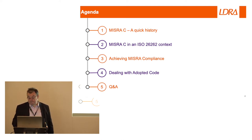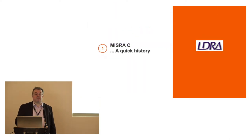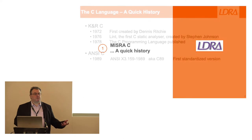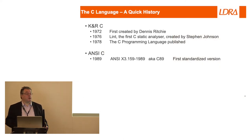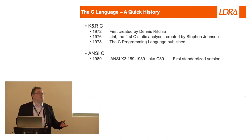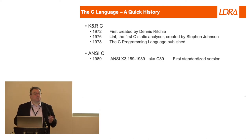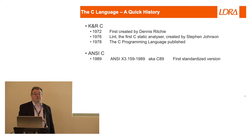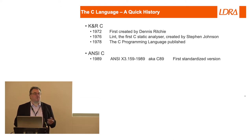Very quickly, because I only have 20 minutes: the C language first came around 1972, written in Bell Labs by Dennis Ritchie, basically to write the Unix operating system. That's effectively why it was created, but it's been used a whole lot more since. Only a few years later, the same people at the same university realized the C language had a lot of problems, so they created Lint as a static analyzer of C code.